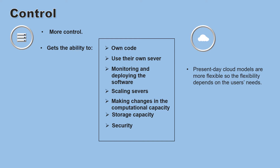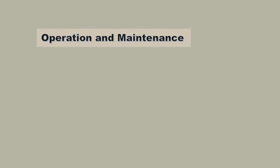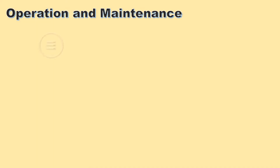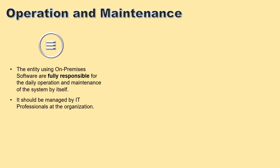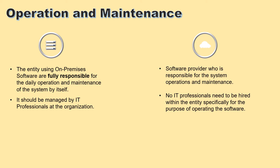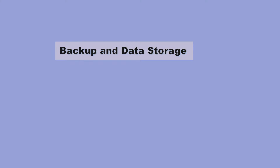The entity using on-premise software is fully responsible for the daily operations and maintenance of the system, and it should be managed by IT professionals at the organization. For cloud-based software, it is the software provider who is responsible for system operations and maintenance, so no IT professionals need to be hired within the entity specifically for that purpose — all upgrades will be done by the provider.